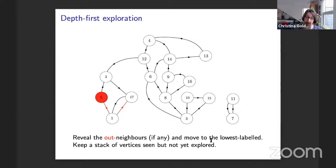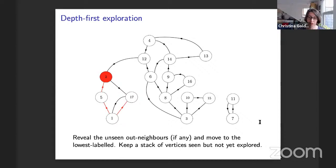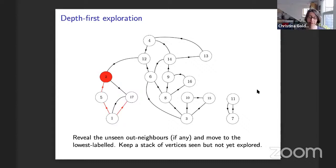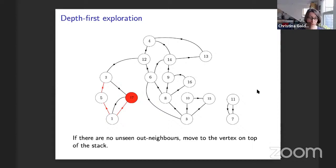Continuing the depth-first exploration: I explore the out-neighborhood of each vertex. When a vertex has no new out-neighbors (i.e., all neighbors are already known), I move to the vertex on top of the stack. When the stack is empty, I move to the next lowest-labeled unexplored vertex. This picks out a directed forest in red. I let F_D be the directed forest on vertices 1 up to N picked out by this depth-first exploration.